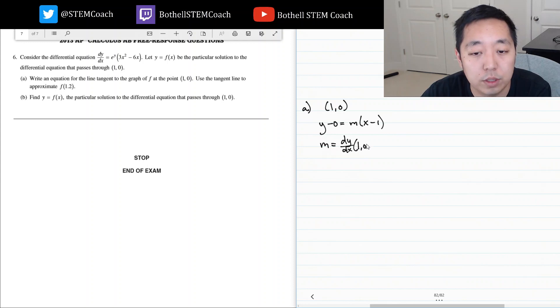To find m, I need to find the derivative dy dx at the point one zero, and I can plug it into this equation. That's e to the y, which is zero, three times one squared minus six times one. E to anything except zero is one, that's one times three minus six. So this is minus three. So my equation is y equals minus three x minus one.